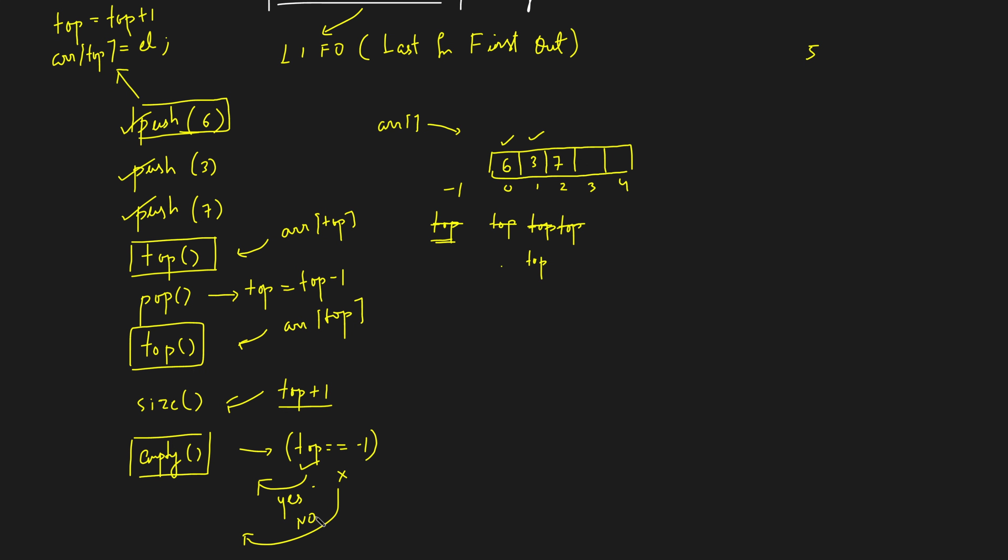Because if it is not minus 1 that means stack is still point, like the top pointer is still pointing to some element and the stack is non-empty. So this is how you can implement stack using arrays.